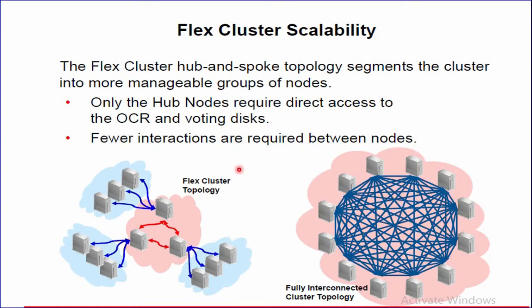There are two ways to scale the Flex Cluster. The two-layered Hub and Spoke Topology is the key feature of Flex Cluster that allows us to scale beyond limits. The Hub and Spoke Topology segments the cluster into groups of nodes, and each group contains a manageable number of nodes. The first effect is: by limiting the size of the Hub, contention for key cluster resources like Oracle Cluster Registry (OCR) and voting disk does not increase significantly due to the addition of the leaf nodes.